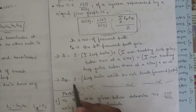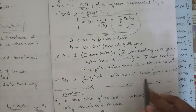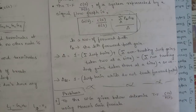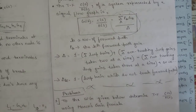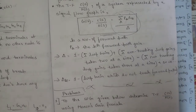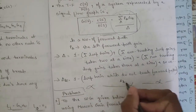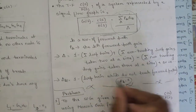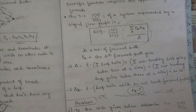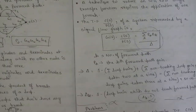Delta_k is 1 minus the loop gains that do not touch the kth forward path. If we have more than one forward path, there are chances that some loop gains do not touch that forward path. If there are only one or two forward paths, in most cases delta_k equals 1, since all loops would be touching the forward path.